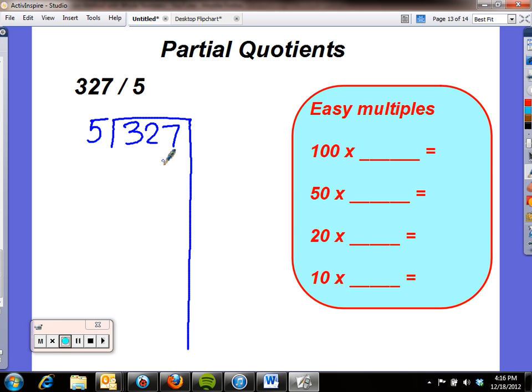In order to help us, we're using a sheet that students have that has easy multiples on it, and this is a simplified version here. This helps me decide how many fives go into 327 without going over.